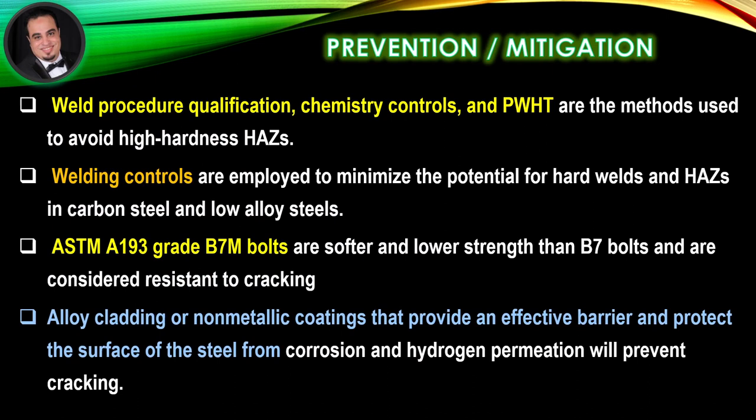Prevention and Mitigation: Weld procedure qualification, chemistry controls, and post-weld heat treatment are methods used to avoid high-hardness heat-affected zones. Welding controls are employed to minimize the potential for hard welds and heat-affected zones in carbon steel and low-alloy steels. ASTM A-193 Grade B7M bolts are softer and lower strength than B7 bolts and are considered resistant to cracking. Alloy cladding or non-metallic coatings that provide an effective barrier and protect the steel surface from corrosion and hydrogen permeation will prevent cracking.